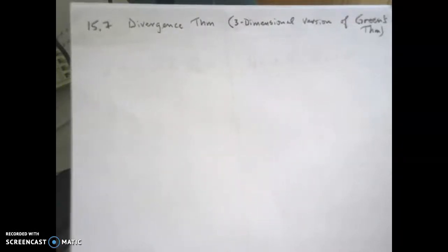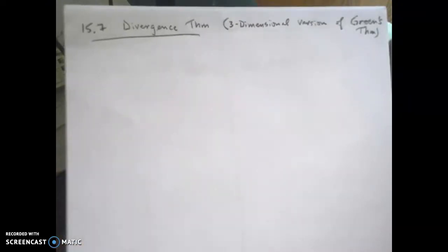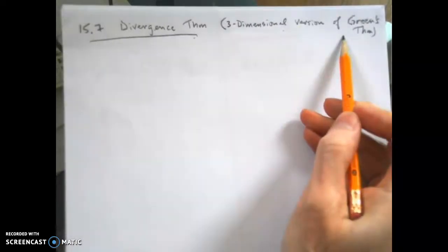Alright, 15-7 is all about the Divergence Theorem. Basically, what the Divergence Theorem is, is it's a three-dimensional version of Green's Theorem.